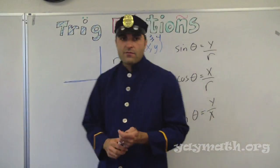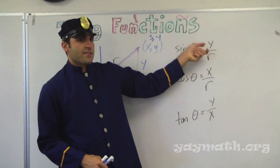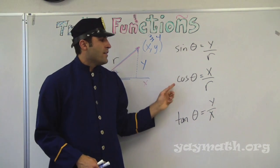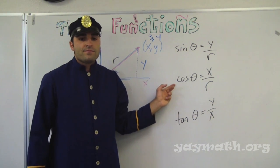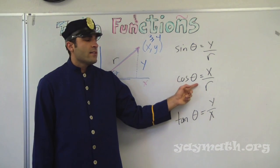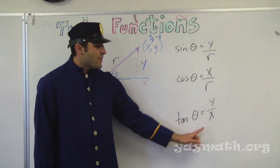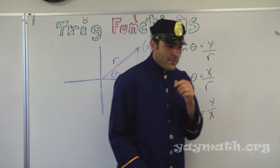And if you were to get the reciprocal functions, cosecant would be the inverse of this. Right. Or the reciprocal of this. r over y. What's the reciprocal function of cosine? R over x. What's it called? Secant. Secant. And secant would be what over what? R over x. And what's the reciprocal function of tan? Cotangent. Cotangent. Which would be? X over y. X over y, right? And you have those on your paper. Right.